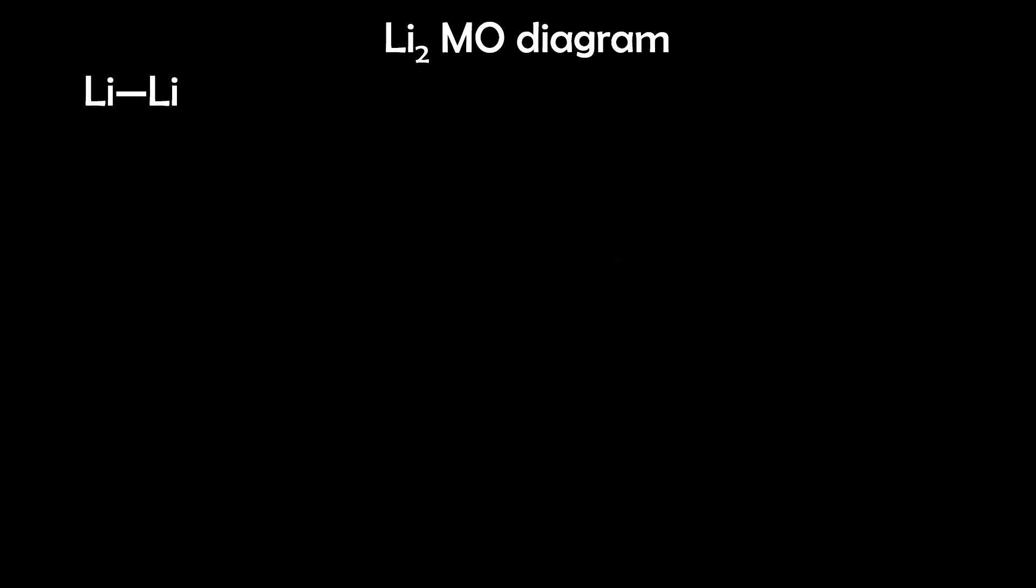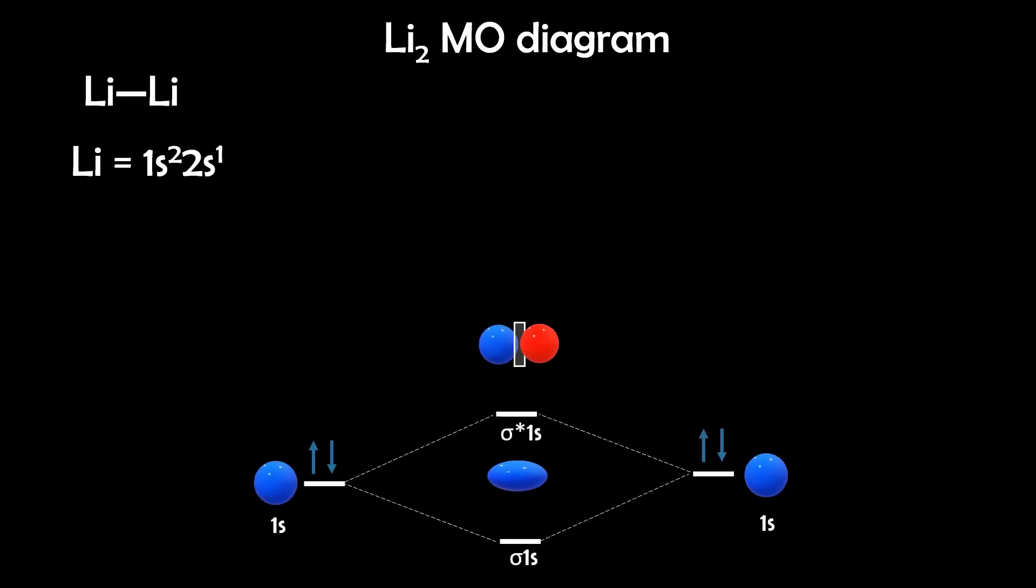So from here, we can explore more complex diatomic molecules like lithium-2 and oxygen-2 using molecular orbital diagrams. Let's start with lithium-2. First, we draw the Lewis structure, then write the electron configuration for each lithium atom. So we have 1s²2s¹. Both atoms have a 1s and 2s orbital that are close in energy and their symmetries are compatible. So they can overlap to form molecular orbitals.